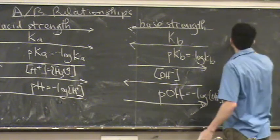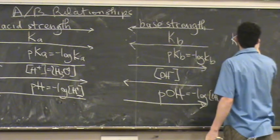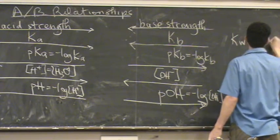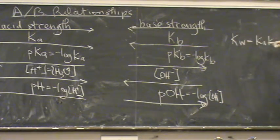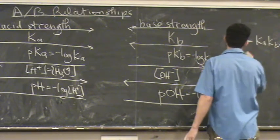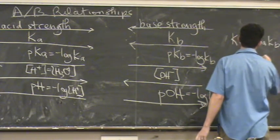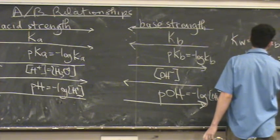So the related formulas are the following. Kw equals Ka times Kb for the first one. For the second one, pKa plus pKb equals 14.